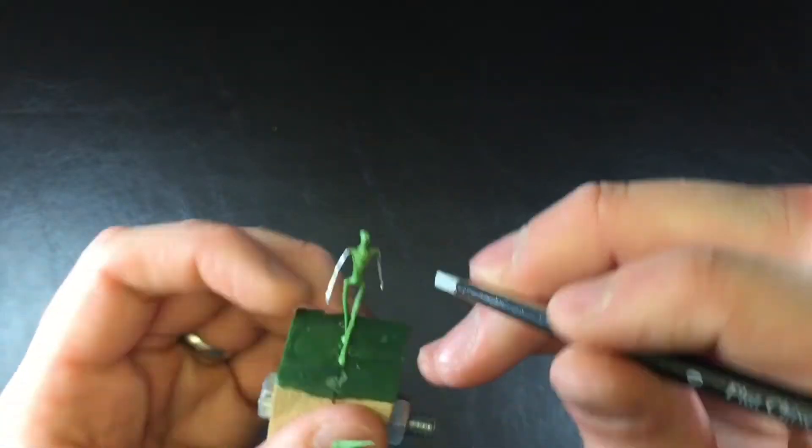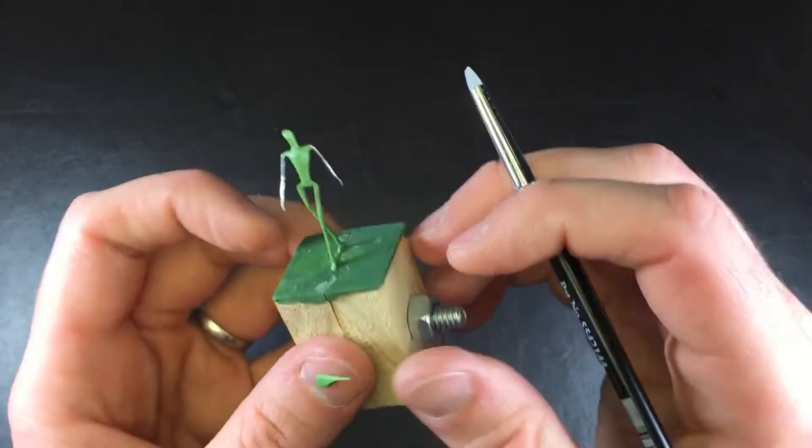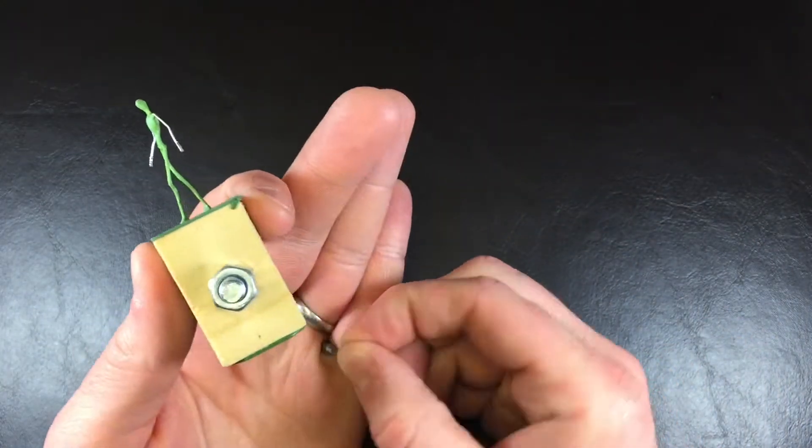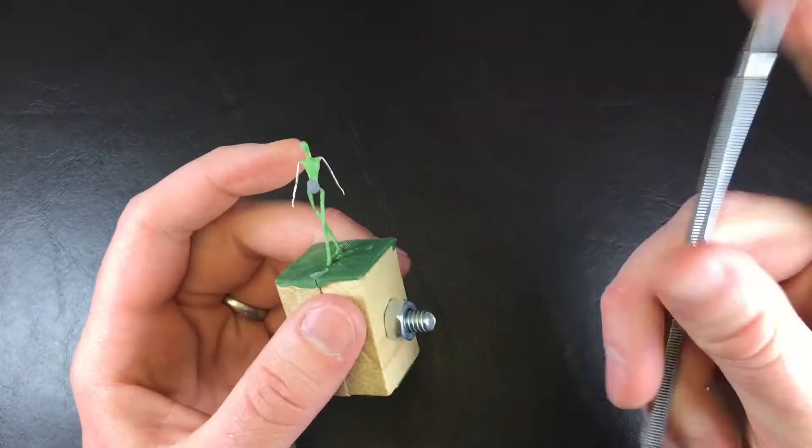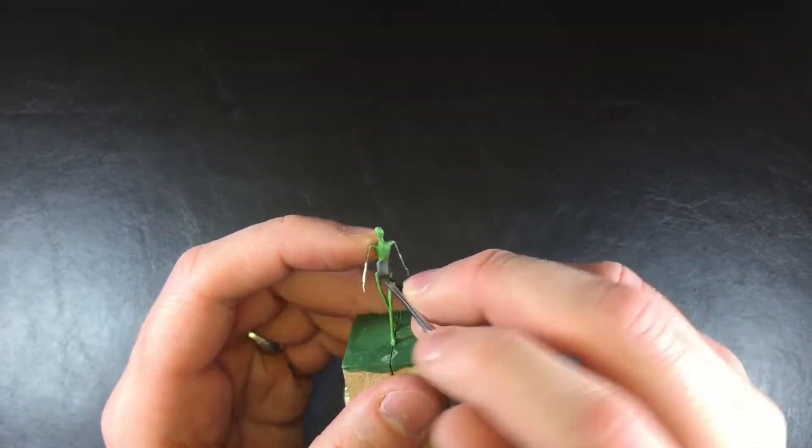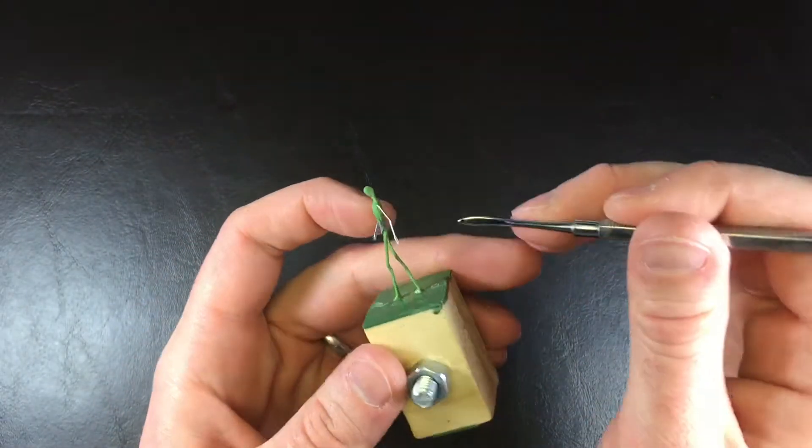All right, now that you have the base layer of green stuff putty down, we're gonna start adding the Fimo. I should probably go into a little bit of what Fimo is real fast.